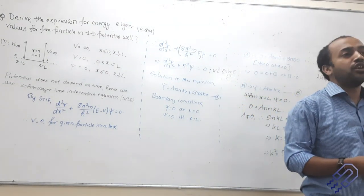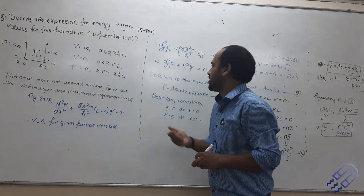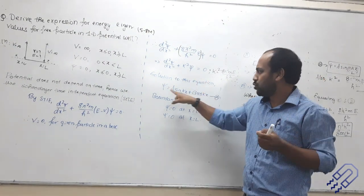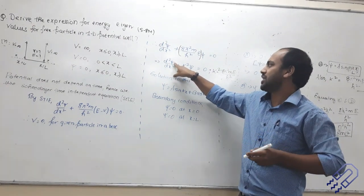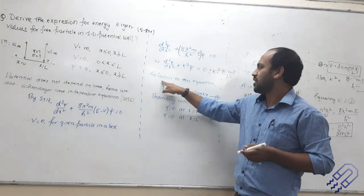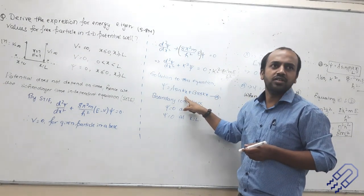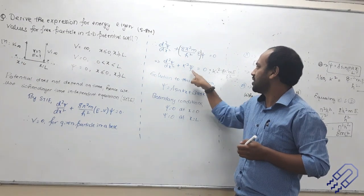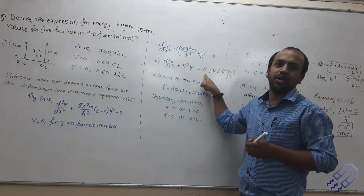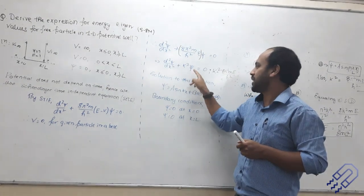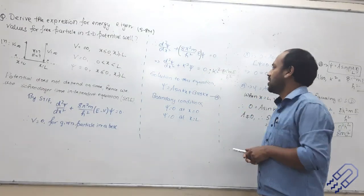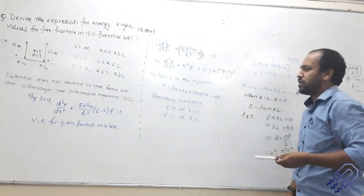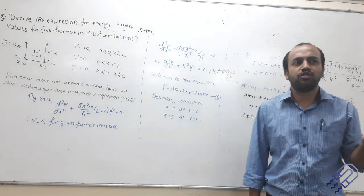We try to solve this second-order differential equation, which was in your class 12 syllabus. This is one of the most common forms of a second-order differential equation. The solution to this equation will always be ψ = A sin(kx) + B cos(kx), where k² = 8π²mE/h². You can verify by substituting this value of ψ back into the equation and it will become zero. K squared is written as 8π²mE/h².